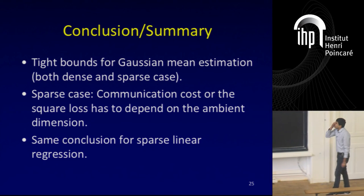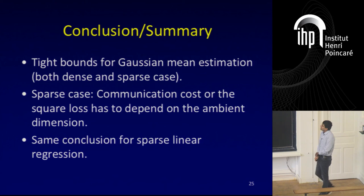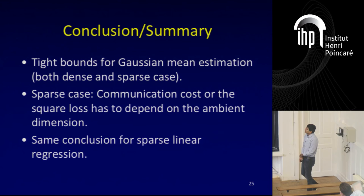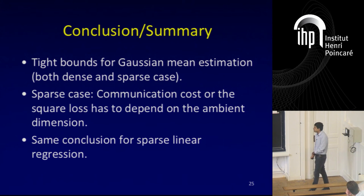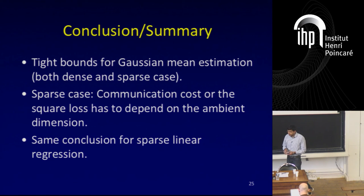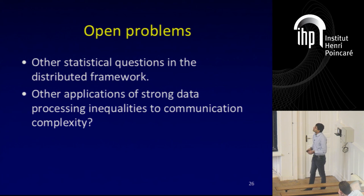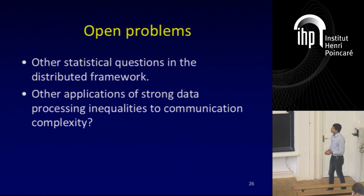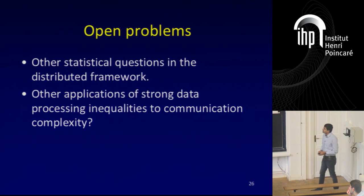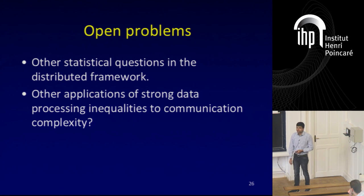To conclude: we prove tight bounds for loss-communication trade-offs for the Gaussian mean estimation problem, both in the dense and sparse case. The takeaway in the sparse case is that either the communication cost or the square loss must depend on the ambient dimension — you cannot save the ambient dimension in both. The same conclusion holds for sparse linear regression, which is an easy deduction from sparse Gaussian mean estimation. One interesting open direction is studying other statistical questions in the distributed communication complexity framework, and another is finding more applications of strong data processing inequalities in communication complexity.